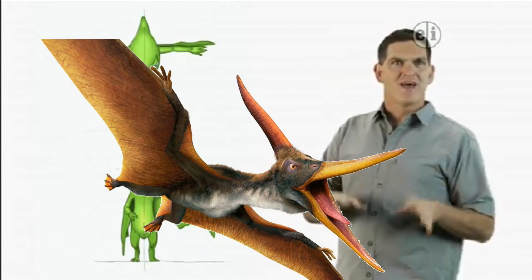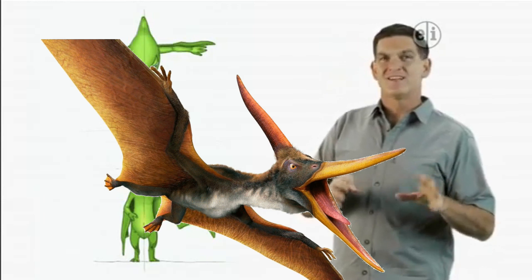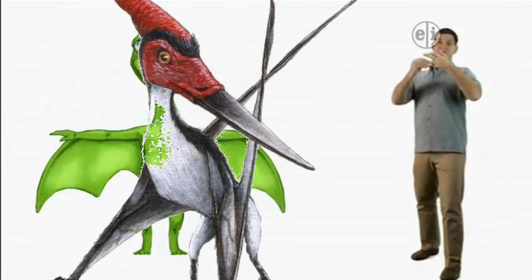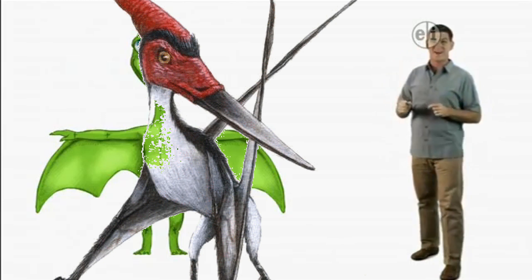And pterosaurs had hollow bones, and their wings were made of skin attached to a really long fourth finger. Imagine stretching your fourth finger to be longer than your entire body.